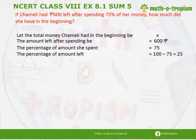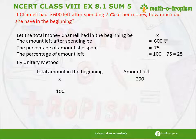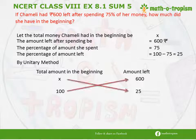Now we have 4 quantities and by the unitary method, we are going to find X. We write the headings as the total amount at the beginning and the amount left. When the total amount is X, the amount left is 600. And when she had Rs. 100, the amount left is Rs. 25. We do cross multiplication, keeping X on the left hand side, giving us 25 × X = 600 × 100.